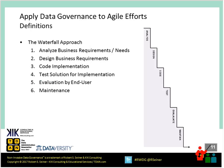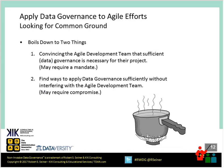In the waterfall approach, we analyze business requirements, we design them, and we code the implementation — but you don't see the word 'repeat.' Very rarely do we go back and redefine requirements unless absolutely necessary. Organizations following waterfall spend a lot of time up front with steps one and two before getting into step three. When it comes to applying data governance to agile efforts, it basically boils down to two things, since the approaches are very different — one very structured and linear, the other completely iterative.